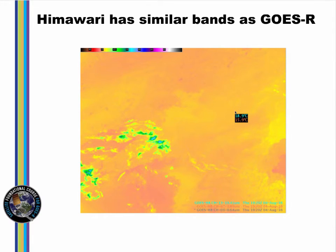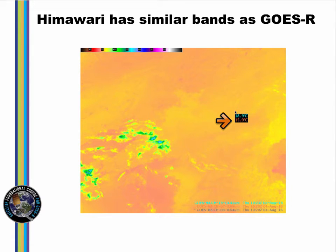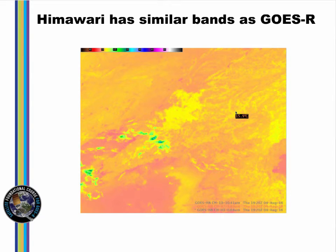This slide shows Himawari data over northeast China near the Korean Peninsula. The bands shown on this slide are also present on GOES-R. The band 13 or 10.4 micron imagery shows a fairly flat field. The probe shows temperatures from 10.4 and 3.9 microns on a point. The 3.9 micron temperature is much cooler in many places, which are obvious in the 3.9 micron imagery. Water-based clouds are filling the valleys in this region of Asia, and emissivity differences drive temperature differences between the 3.9 and the 10.4 micron channel.